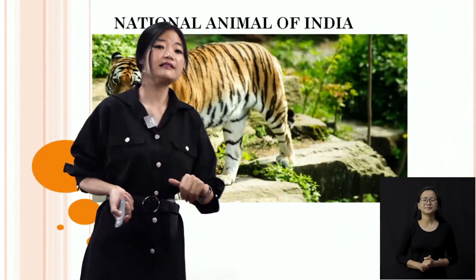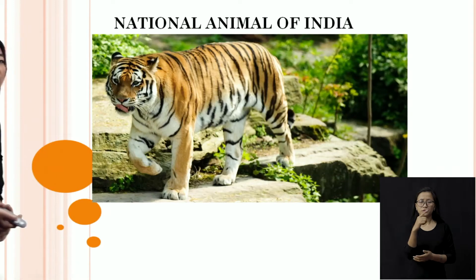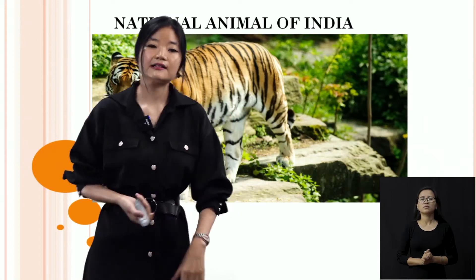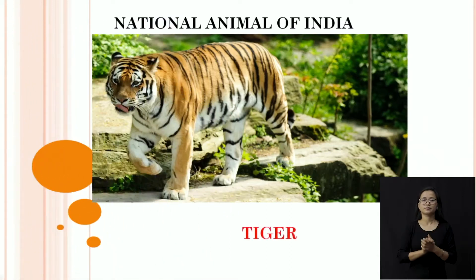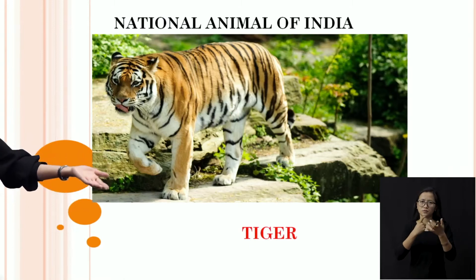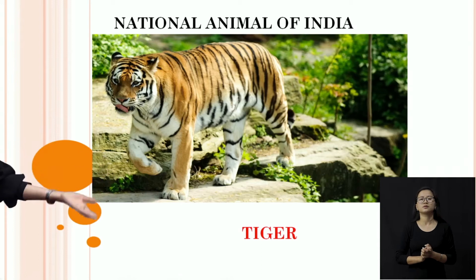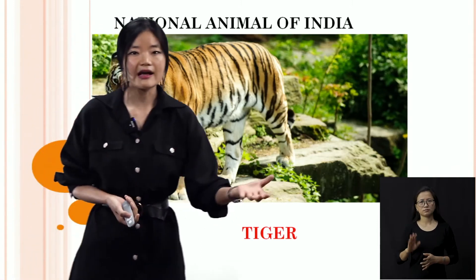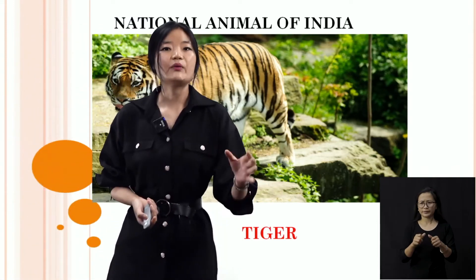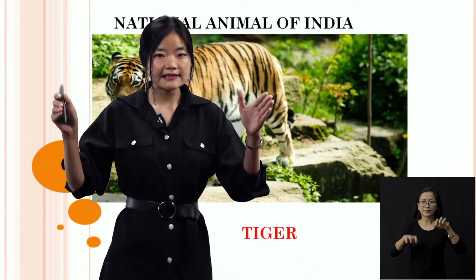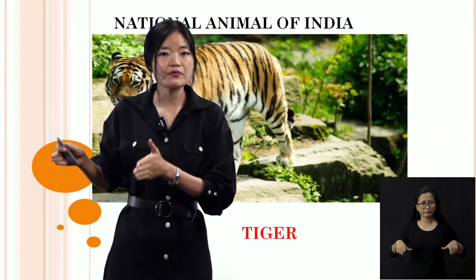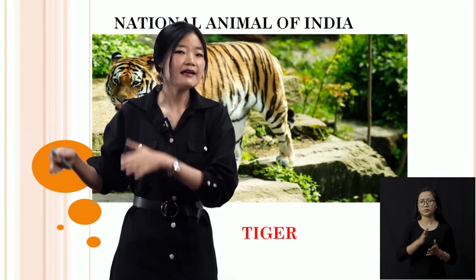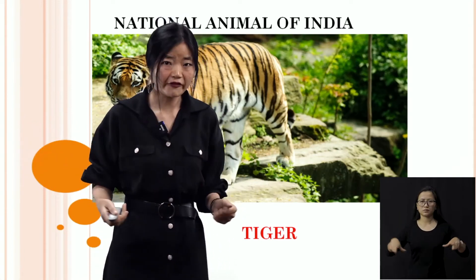So this is the national animal of India. Everybody can identify this picture — this is a tiger. Spelling T-I-G-E-R, tiger. So do not forget, the national animal of India is tiger. However, I have to make it very clear — this is the national land animal, which means they live on the land, not in the water.